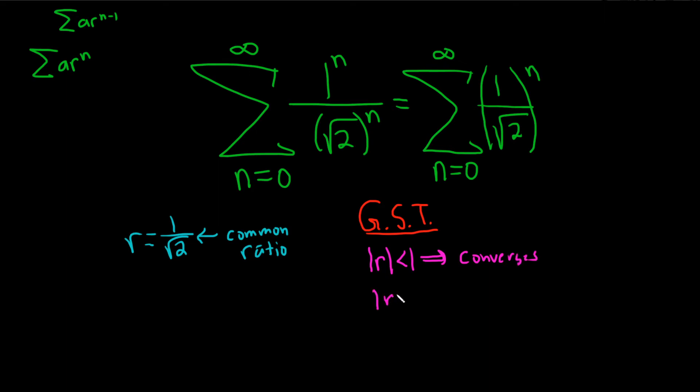If the absolute value of r is greater than or equal to 1, then your series diverges. So in this case we need to figure out what the absolute value of r is. So this is just 1 over the square root of 2. This will be, well 1 over the square root of 2, what is that? So 1 divided by square root of 2.